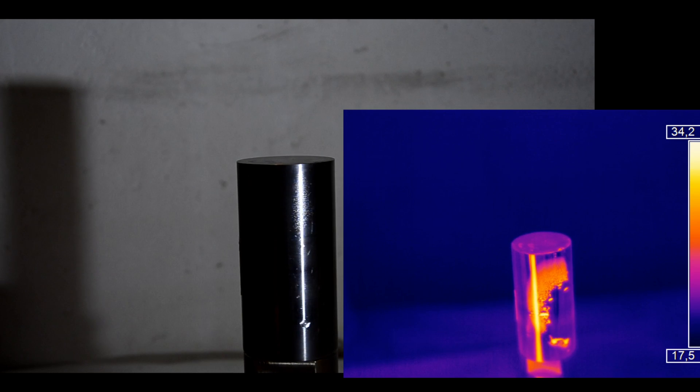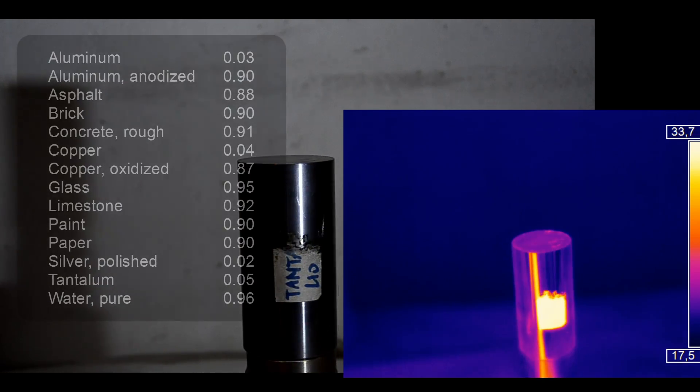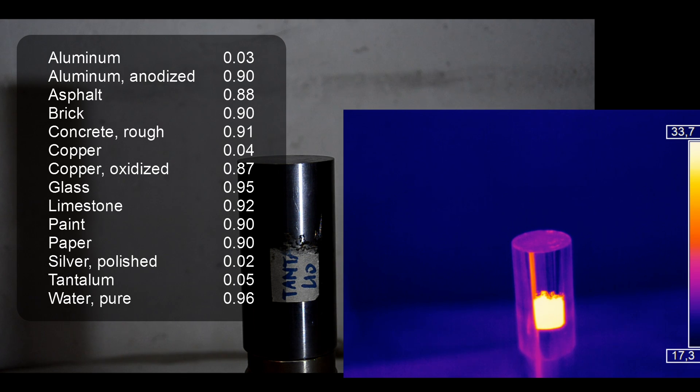The emissivity in general gives the amount of light emitted by a given material in comparison to a black body. So 0 means no emitted light and 1 means that the light emitted is exactly like a black body.